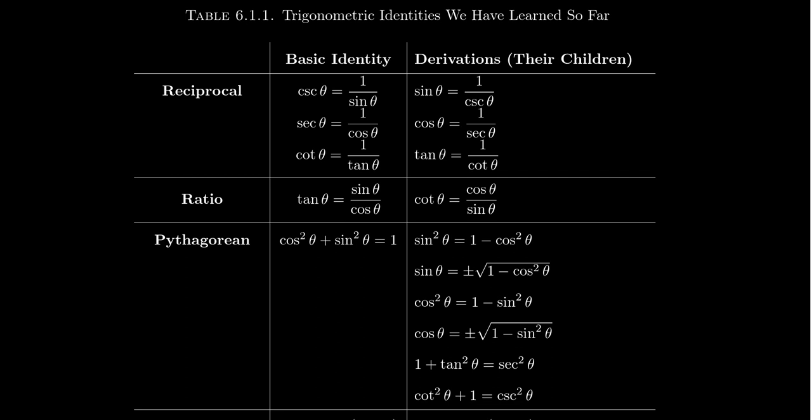These are identities that every student of trigonometry really does need to know. To make it easier to remember them, I'm going to put them in families based upon certain types. The first family of fundamental identities is going to be called the reciprocal identities, the reciprocal family.